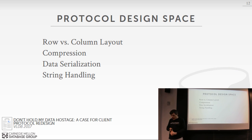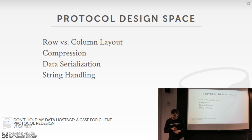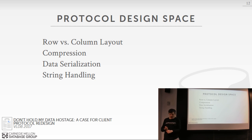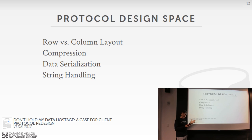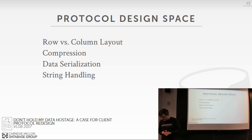For today's class, from the paper you read, I want to discuss four aspects of the wire protocol that can significantly affect performance. I really like this paper from the MonetDB team at CWI in Europe — it's the kind of paper I wish I had written. There's no other paper that goes into this kind of detail breaking down what's happening with JDBC and ODBC and how it affects performance. The four topics are: row storage versus column stores, compression, data serialization, and string handling.